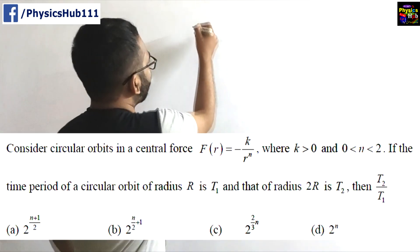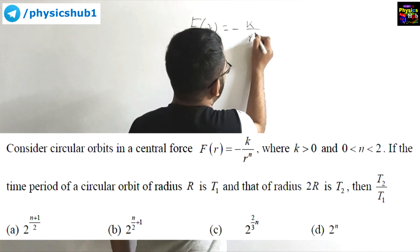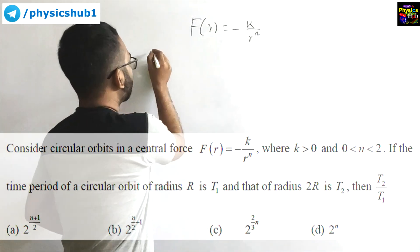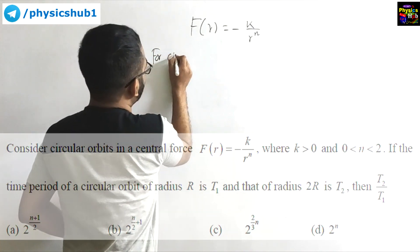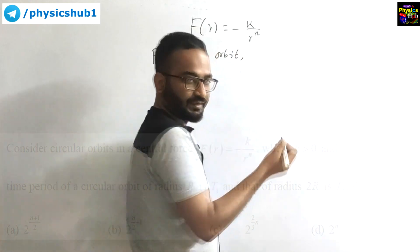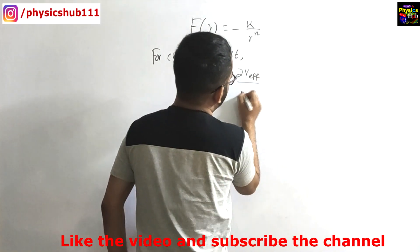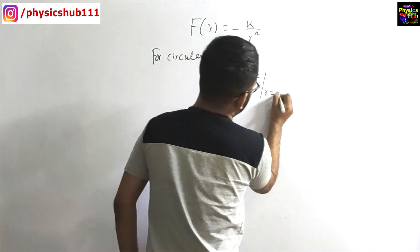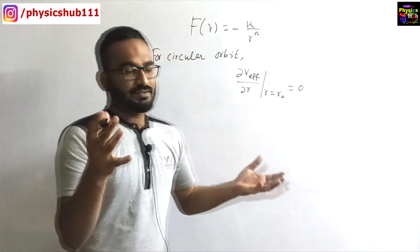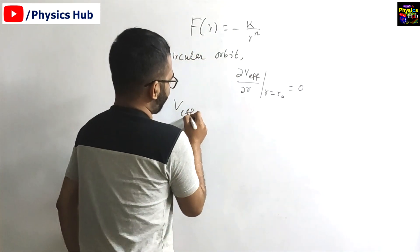What is given to us? We are given the force f(r) = -k / r^n. Now we have to consider circular orbits. For a circular orbit, the condition is: dV_eff/dr evaluated at r = r₀ should be equal to 0. So firstly we calculate V_eff.